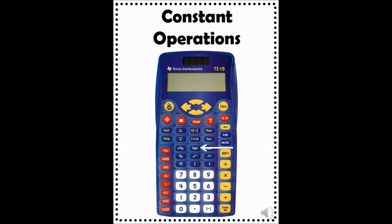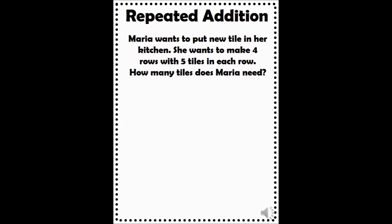You can tell your calculator to remember any operation you want. For example, you can program your calculator to skip count by a given number, repeatedly multiply by a given number, or repeatedly divide by a given number. These are called constant operations and they are very helpful in finding missing numbers and patterns. There are many ways to use this function. For this video, we will ask the calculator to repeatedly add by a given number. Let's read this problem: Maria wants to put a new tile in her kitchen. She wants to make 4 rows with 5 tiles in each row. How many tiles does Maria need? You can solve this problem by skip counting by 5's or repeatedly adding 5. We will program the calculator so that every time the OP1 button is pressed, it will add 5.